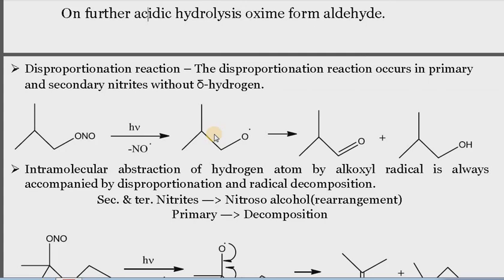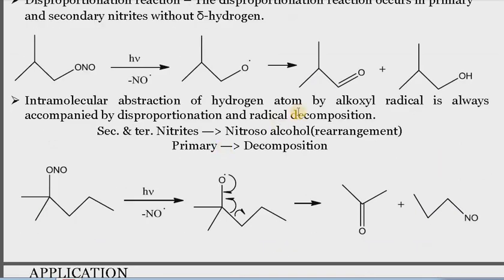This disproportionation reaction occurs in primary and secondary nitrites without a delta hydrogen. If the nitrite does not have a delta hydrogen, disproportionation takes place, and we get two products: one is the carbonyl compound (the oxidized product) and the second is the alcohol (the reduced product).